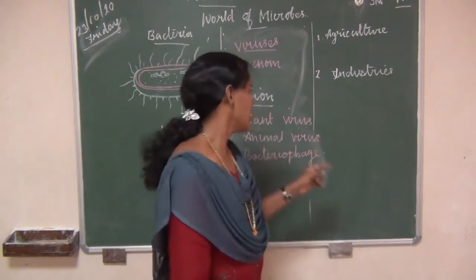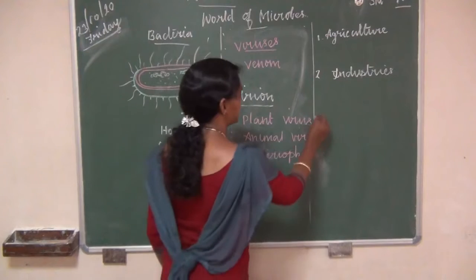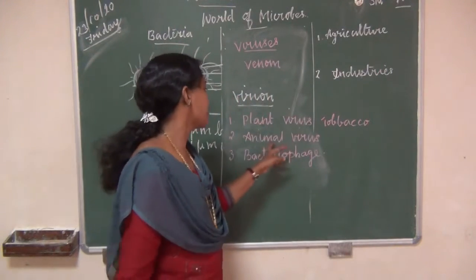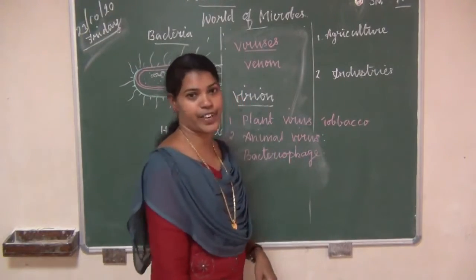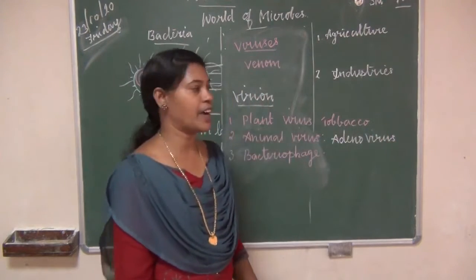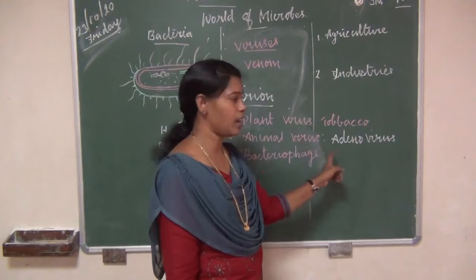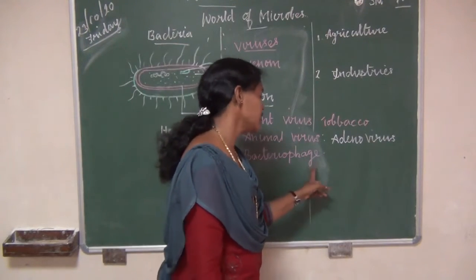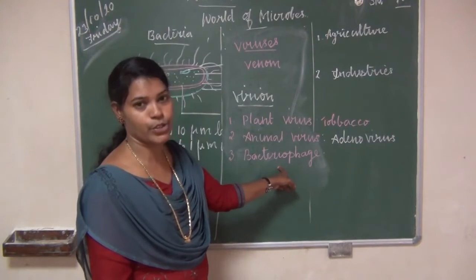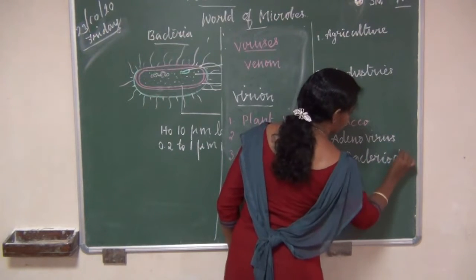Plant virus: viruses that infect plants are known as plant virus. Example: tobacco mosaic virus. Animal virus: viruses that infect animals. Example: adenovirus. Bacteriophage: viruses that infect bacterial cells. Example: T4 bacteriophage.